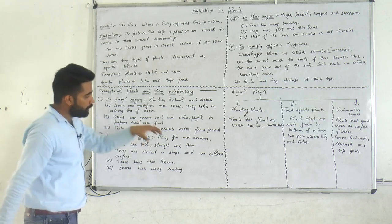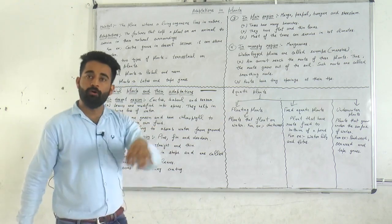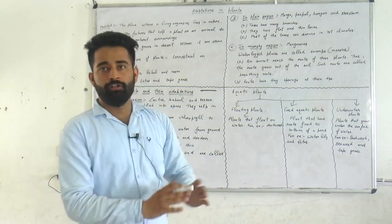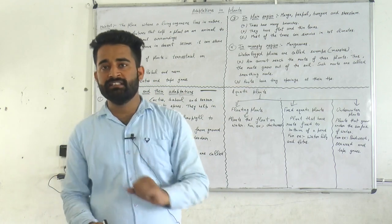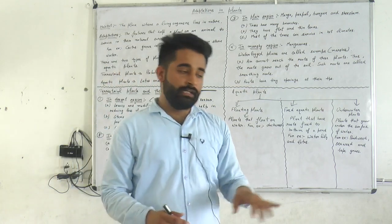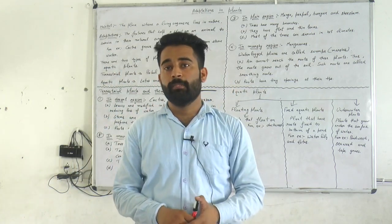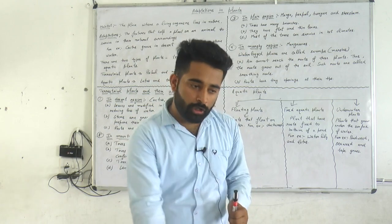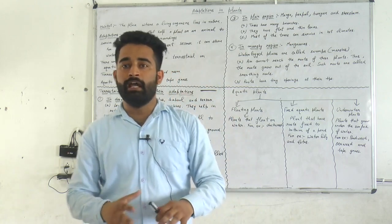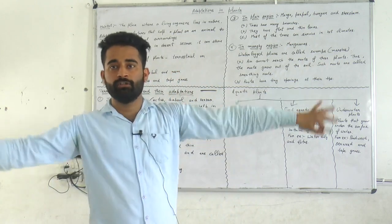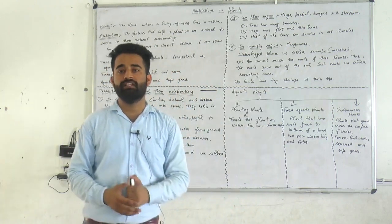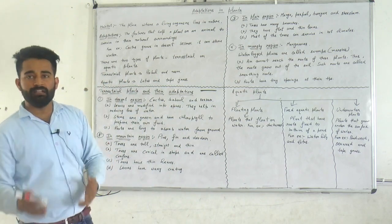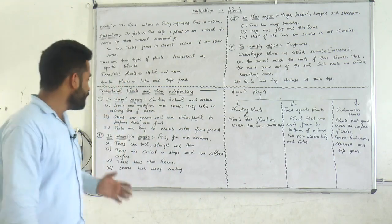The third adaptation is that roots are very long and grow deep into the ground to absorb water. Since water is not present on the surface of the desert, their deep roots help them absorb water from underground. These are the adaptations of plants that grow in the desert area.